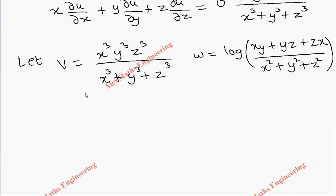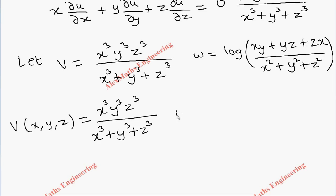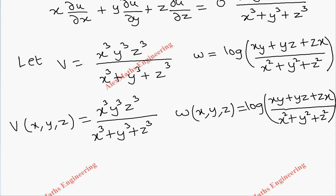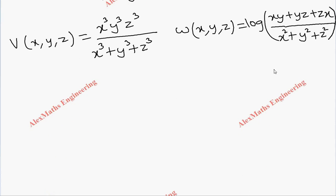We rewrite this as v(x, y, z) since the function is in terms of x, y, and z. Similarly, w is w(x, y, z). To check whether each is a homogeneous function and to find the degree, we replace x with tx, y with ty, and z with tz. Let's start with function v.